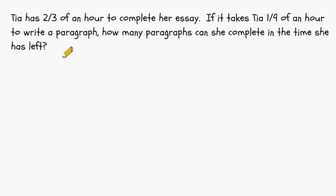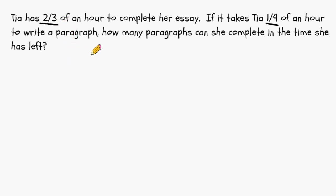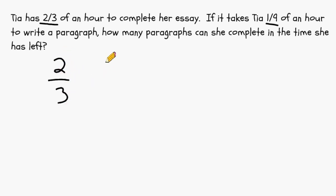This problem says that Tia has 2 thirds of an hour to complete her essay. If it takes Tia 1 ninth of an hour to write a paragraph, how many paragraphs can she complete in the time she has left? The total amount of time that Tia has to work with is 2 thirds of an hour, so that is the total we are going to divide up. We want to see how many times 1 ninth can fit inside that total, since 1 ninth of an hour represents one paragraph. So we are going to start with 2 thirds and divide that by 1 ninth.